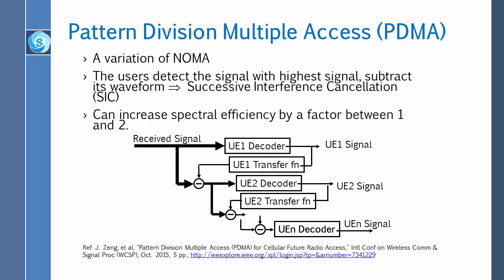In NOMA we didn't probably have the transfer function, but I have to verify that. What happens is you decode the signal, and then you know the channel transfer function of UE1, and then you multiply that again and subtract it out. So this is the signal received from the air, and then you think: if I transmit this pattern, how much signal will I get, and subtract that out. This is even more complicated. This is called PDMA.